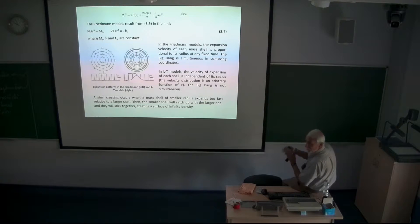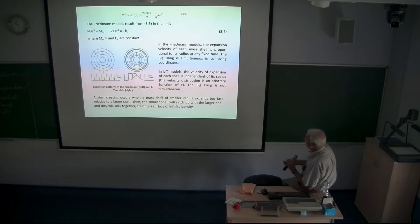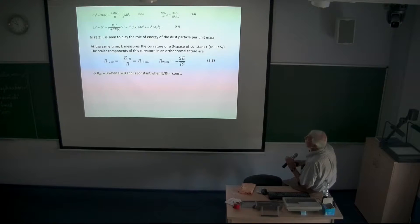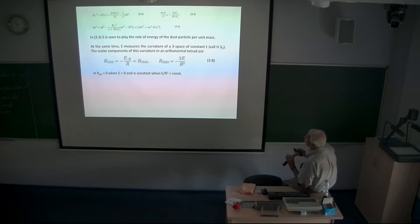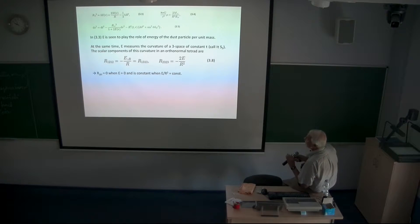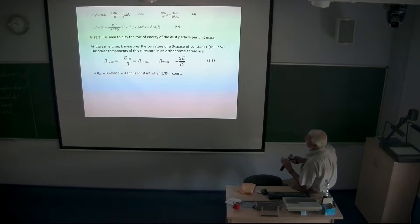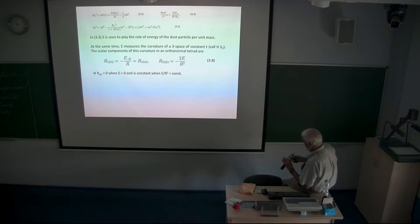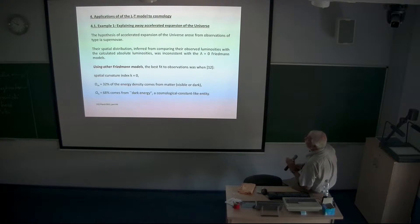A shell crossing occurs when a mass shell of smaller radius expands too fast relative to a larger shell — after some time, the smaller shell catches up with the larger one and they stick together, creating a surface of infinite mass density. In this equation, the function E plays the role of the energy of the dust particle per unit mass, and at the same time E measures the curvature of three-space of constant time. The scalar components of this curvature in an orthonormal tetrad become zero when E equals zero and constant when E has a particular form.